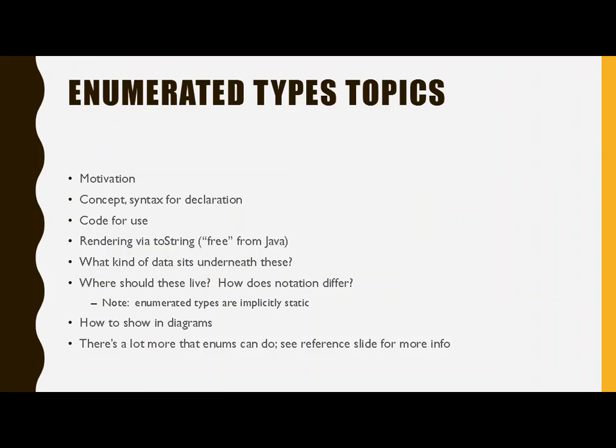The first thing we're going to do is talk about the motivation. Then we'll talk about how they look in code. A couple of things to mention: they are free — when you go to do a toString, they will automatically render themselves like most Java objects, so you don't have to write any special code to make them show up. When you print them, they're going to print their value. The kind of data that sits underneath these things is an integer, so they are very compact — actually even smaller than an int. We're also going to look at where these should live. Good encapsulation says put everything at the smallest possible scope, so often we're going to put these in the classes in which they are used.